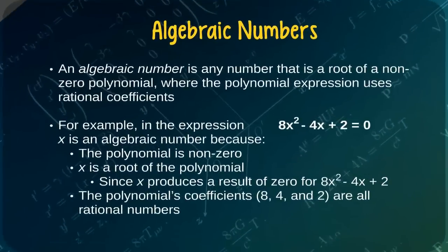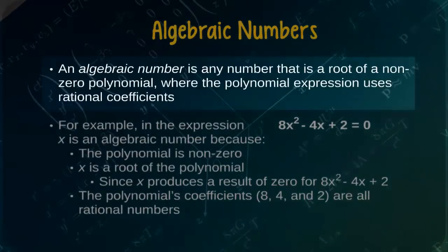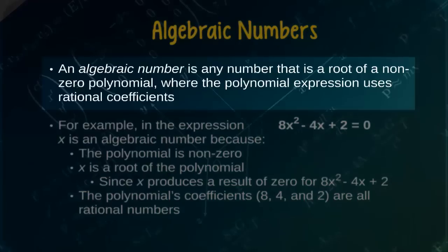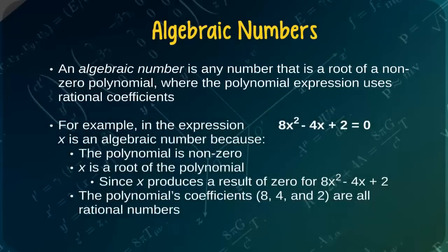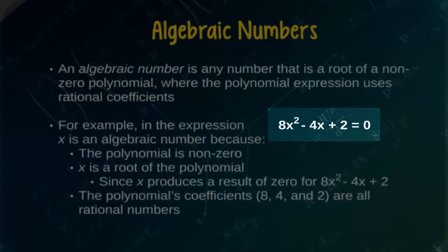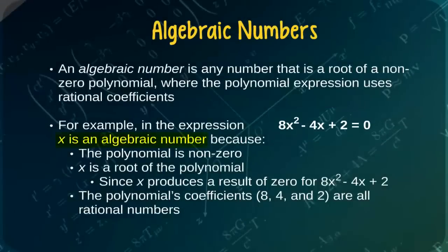Unfortunately, the definition of an algebraic number is quite technical, so we will seek to understand algebraic numbers using an example. Technically speaking, an algebraic number is any number that is a root of a non-zero polynomial where the polynomial expression uses rational coefficients. That definition is a bit scary, so let's consider an example. Imagine that we have a polynomial expression such as 8x squared minus 4x plus 2 equals zero. In this polynomial, x is considered to be an algebraic number because the polynomial is non-zero, x is a root of the polynomial, and the polynomial's coefficients, that is 8, 4, and 2, are all rational numbers.